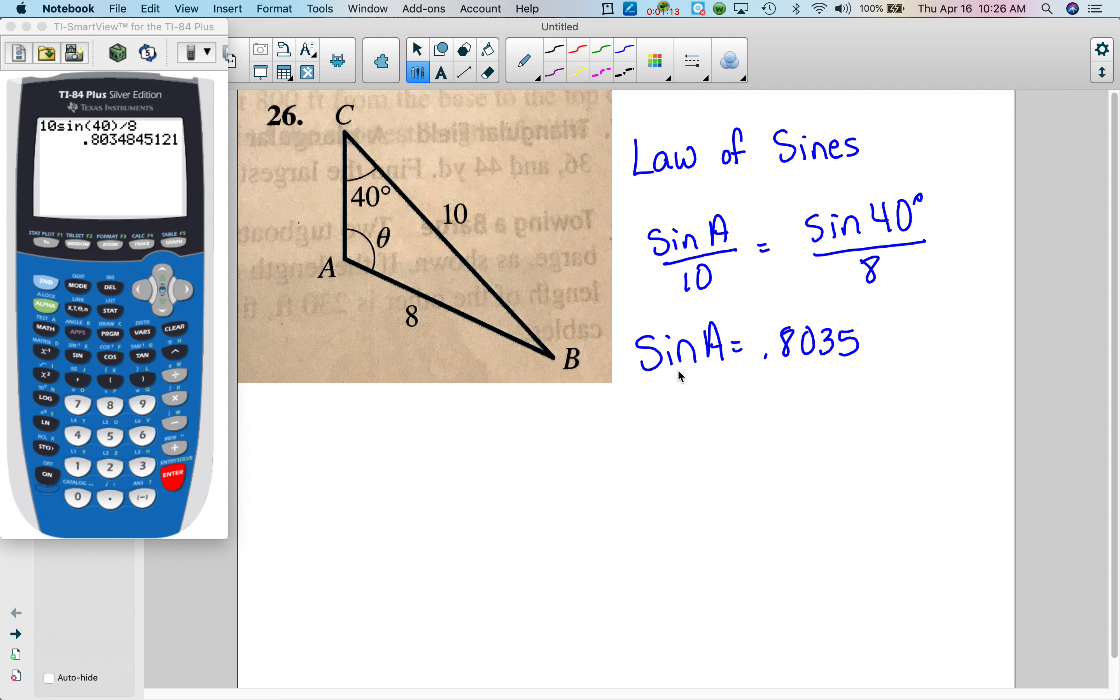Okay, so let me try that again. So we have 10 sine 40 divided by 8, so I get 0.8035 approximately. And now I need to do inverse sine because I'm trying to find the angle. So inverse sine, and I get that A must be 53.5 degrees, and that's what a lot of you had, and it's wrong.